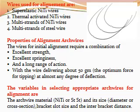Properties of the alignment arch wire: excellent strength, excellent springiness, long range of action with the wire delivering about 50 grams — the optimum force for tipping. The variables in selecting an appropriate arch wire for alignment are the arch wire material, its size — diameter or cross-section — bracket slot size, and inter-bracket distance.